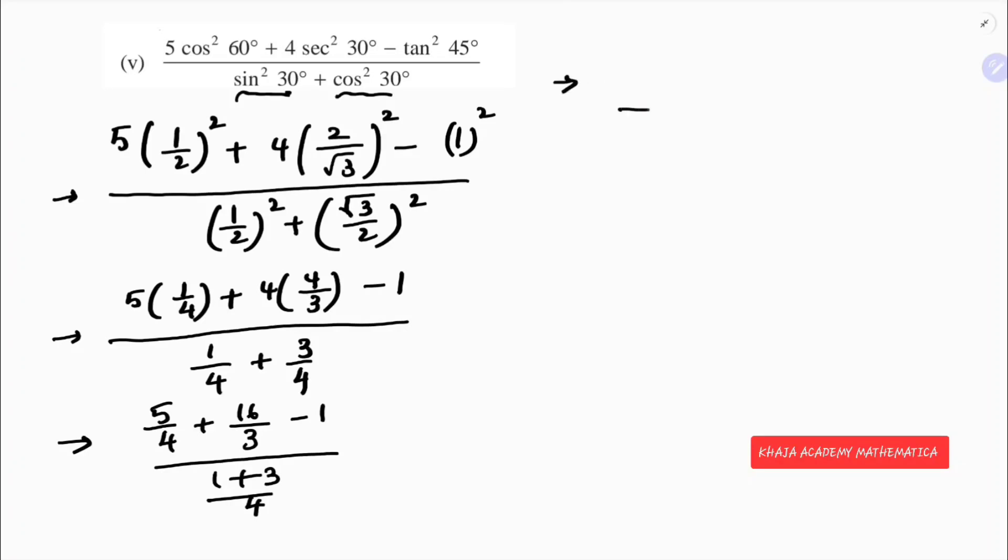The next step, the LCM in the numerator is 12. I will multiply by 3, so 5 into 3 is 15. Here I will multiply by 4, so 16 into 4 is 64. Here by 1, so I will multiply by 12, minus 12.